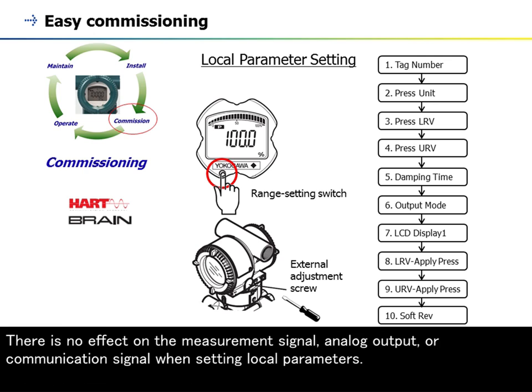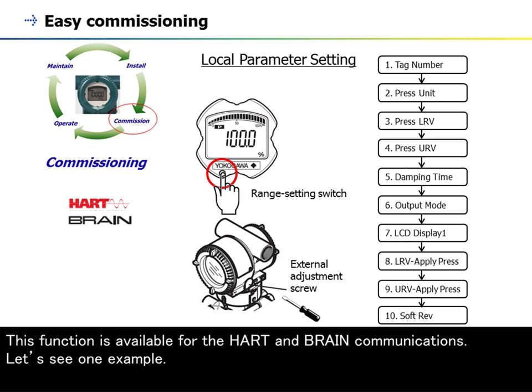There is no effect on the measurement signal, analog output, or communication signal when setting local parameters. This function is available for the HART and BRAIN communications.